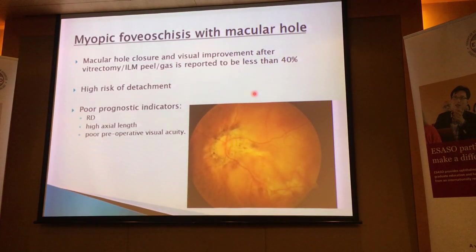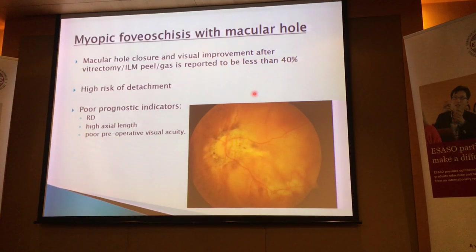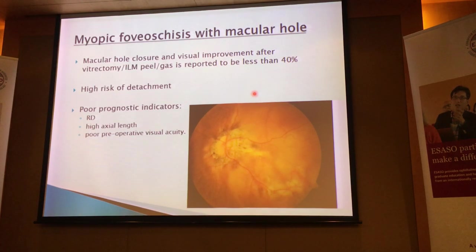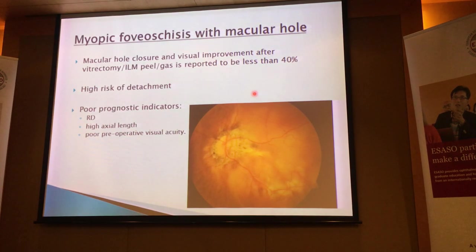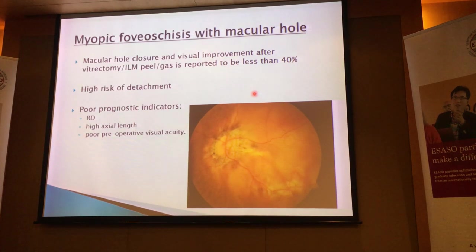Now we come to an increased level of severity — myopic schisis with macular hole. The problem is that the prognosis in these eyes is usually very poor. Macular hole closure and visual improvement after vitrectomy, even with ILM peeling and gas exchange, is usually reported to be less than 40%, which is classifiably quite disappointing.